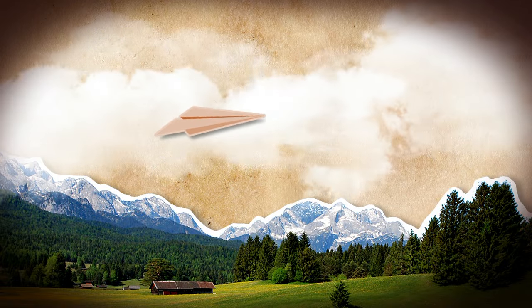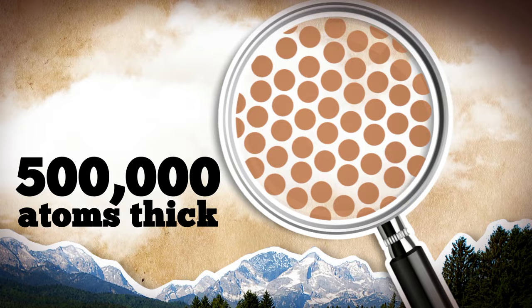It's hard to imagine just how tiny atoms are. One sheet of paper is roughly half a million atoms thick. Volume-wise, one atom is as small compared to an apple as that apple is to the entire Earth.